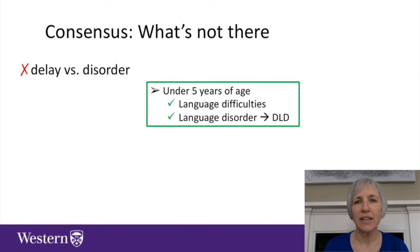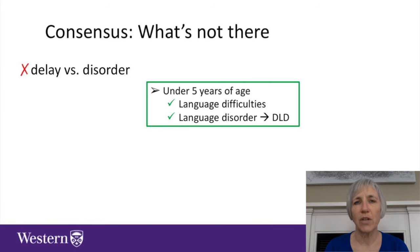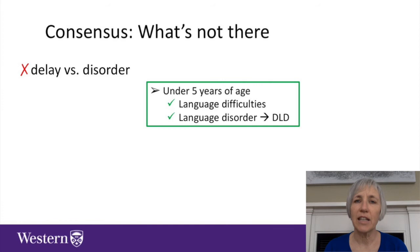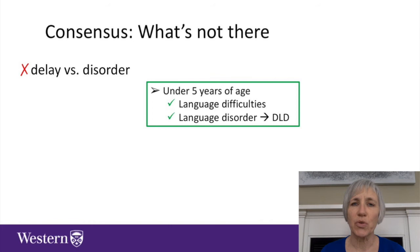This relates to the case where we might not be confident that the language problem we're observing is going to be persistent. For children over five, this doesn't apply — we can be confident that language problems observed in children over five years of age are going to be persistent. In the case of under-fives, however, it could be that the nature of the child's impairments, their risk factors, and co-occurring disorders lead us to question whether this is going to be a persistent language problem. In that case, we're recommending the use of the term language difficulties. Importantly, even in children under five where you're confident the language problem will persist, the term developmental language disorder can be used.